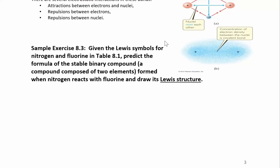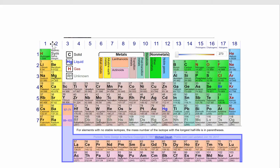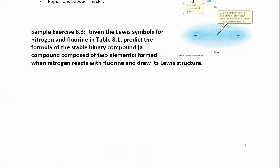We can figure out how many bonds, or how many nitrogen and fluorine atoms need to get together to form a stable compound. If you think about what nitrogen looks like, nitrogen has five valence electrons — if you forgot, just go back to your periodic table: one, two, three, four, five. So nitrogen has five valence electrons, and fluorine has seven valence electrons each.